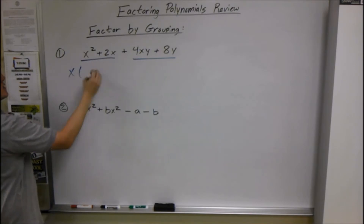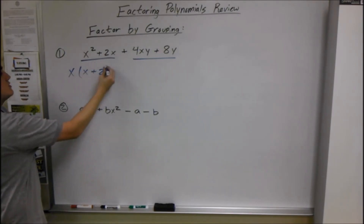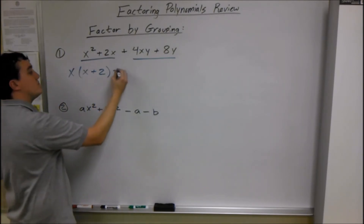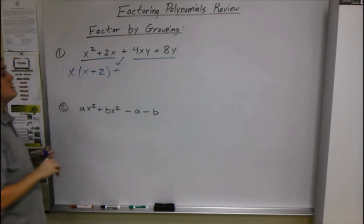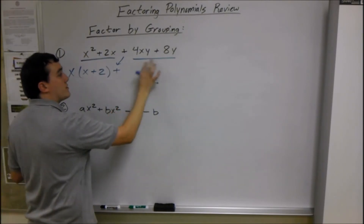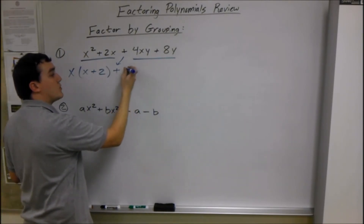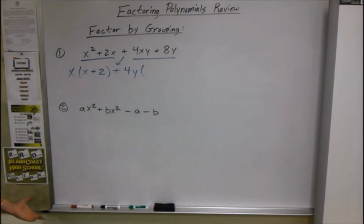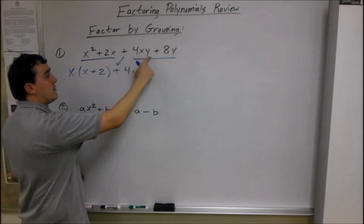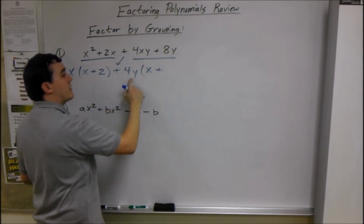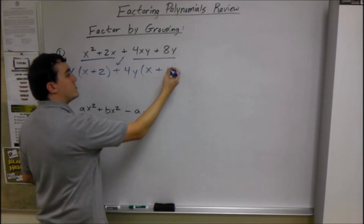If we take out an x, we have (x + 2) left, because we just took one x from each of them, and if we multiply we can get back to there. Plus — whatever sign that is drops. Then what do these two have in common? They're both divisible by 4 and they both have a y, so we take out 4y. Then what do we have left after taking out 4y? Just (x + 2), since 8y divided by 4y is just 2.